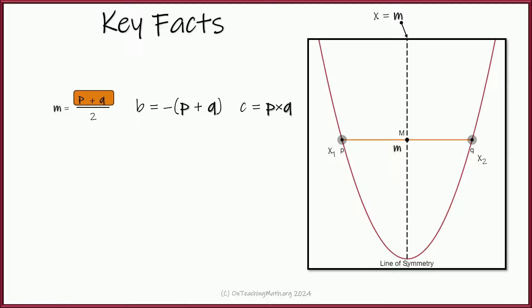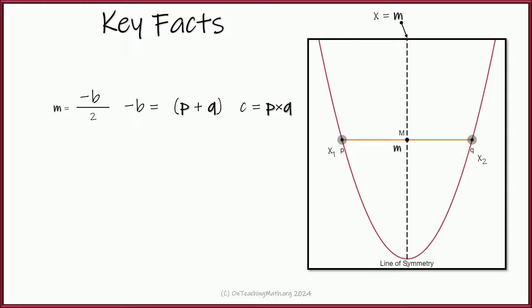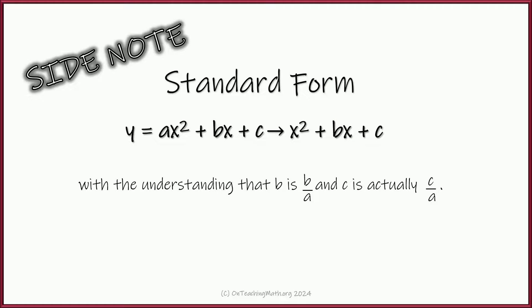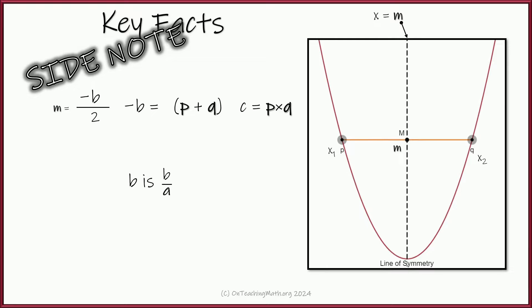Now we know the midpoint is p plus q over 2, and b equals negative the quantity p plus q. If we multiply both sides by negative one, we get an expression that equals p plus q — so we can substitute b right in. The midpoint is negative b over 2. Remembering our side note that dividing by a means b is really b over a, we put that back and get negative b over 2a. That is the x-coordinate of the vertex, and also the equation of the line of symmetry: x equals negative b over 2a.